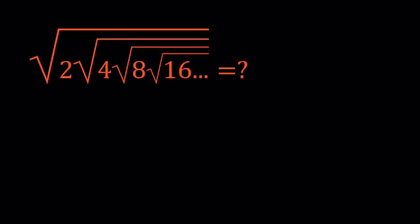Hello everyone. In this video we're going to be simplifying a radical expression, an infinite radical expression. We have the square root of 2 times the square root of 4 times the square root of 8 times the square root of 16, so on and so forth. All of these are square roots and the numbers inside the radicals are all powers of 2. Provided that this expression converges, we're going to find the value to which it converges.